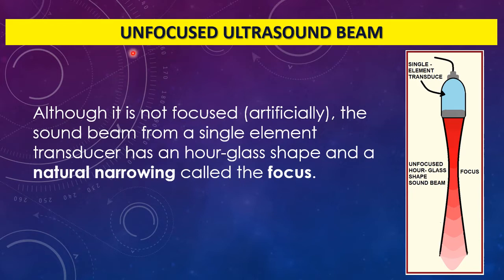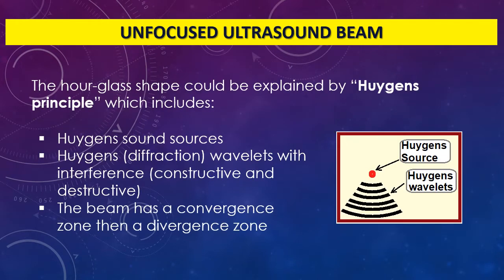That's why we call it the unfocused beam. This unfocused beam has an hourglass shape configuration — it starts wide, narrows, and then goes back to a wider diameter. That's why we call it hourglass-shaped. This hourglass shape has a focus, which is a natural focus. The reason the beam doesn't go in a straight cylindrical configuration but instead has this hourglass shape with a native focus was explained by a scientist.